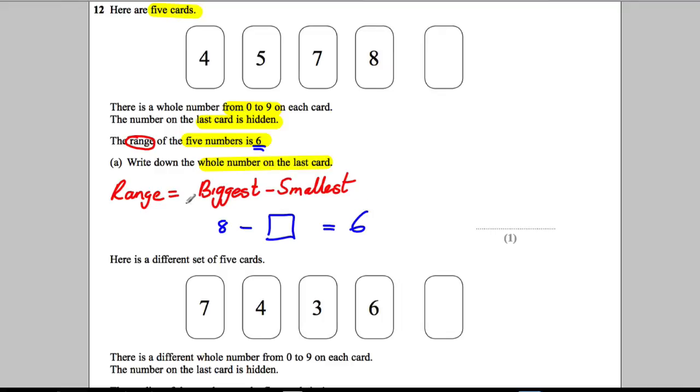You want the range to be 6. You're told the range is 6. If the biggest number you've got is 8 what does this number need to be in order to get 8 subtract something would give you 6? Well the answer would be 2 because 8 subtract 2 is equal to 6. It's the only number you can have in order to get that range to be the one you wanted. So therefore the answer here is 2.